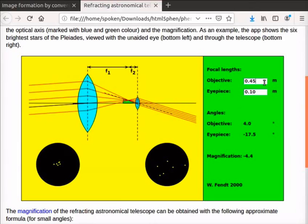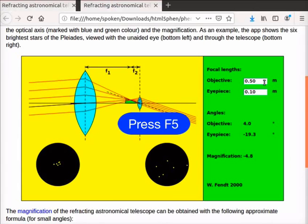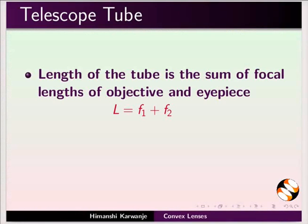Let us now calculate the length of the telescope tube. Change the focal lengths of objective and eyepiece to their default values. Press F5 key on the keyboard to restart the app. Formula to calculate the length of the telescope tube is the sum of focal lengths of objective and eyepiece. That is, L equals to f1 plus f2. Here, f1 is focal length of objective and f2 is focal length of eyepiece. Substitute the focal lengths and calculate the length of the telescope tube. Observe that the length of the telescope is 0.6 m.